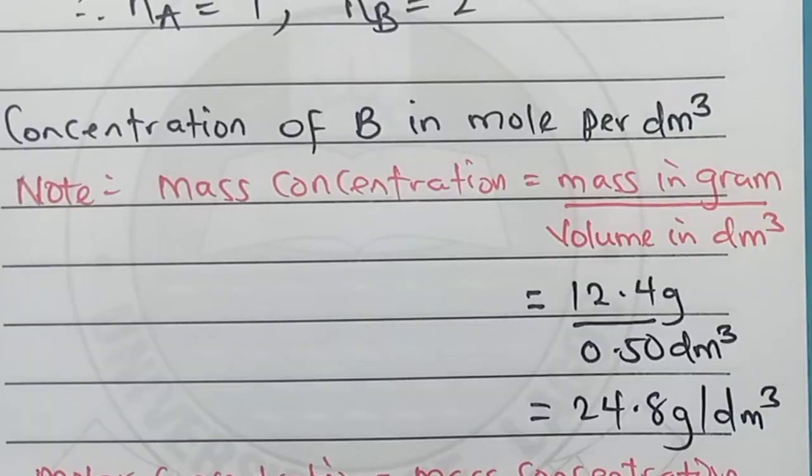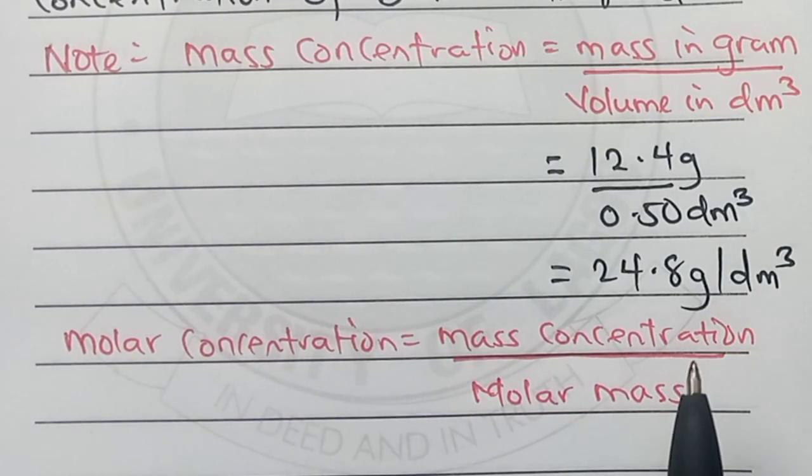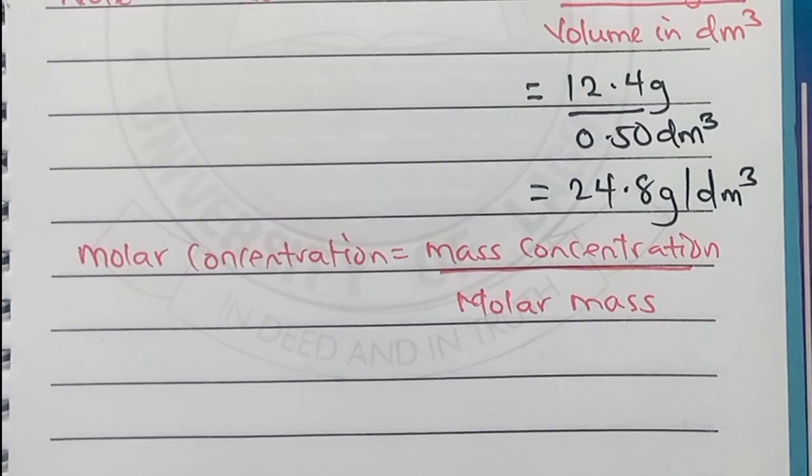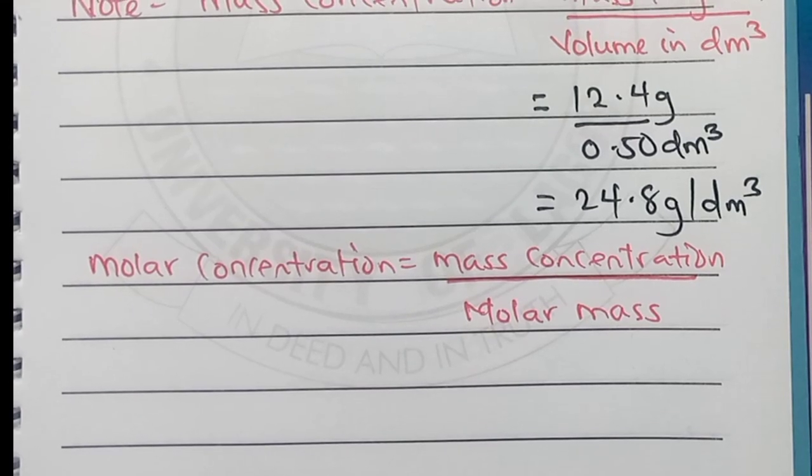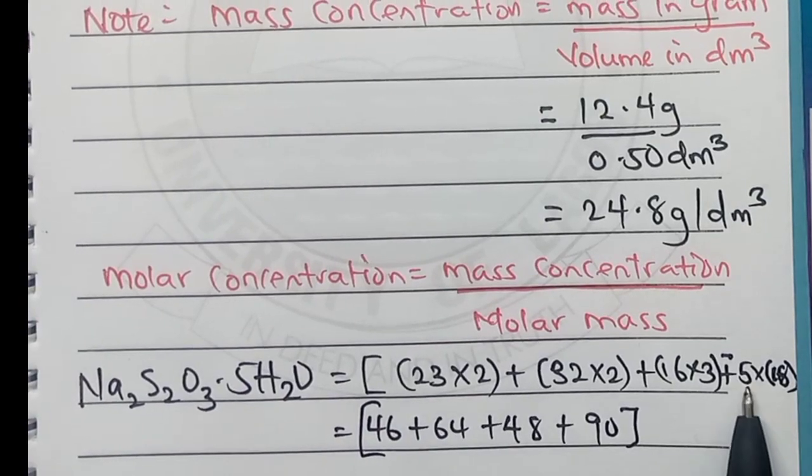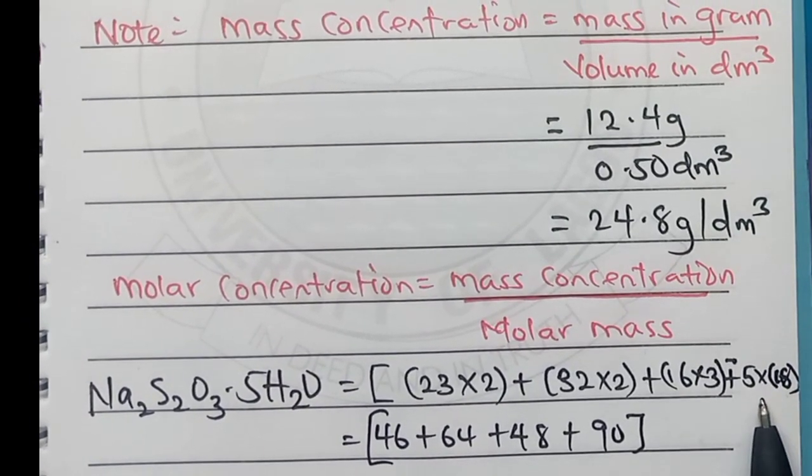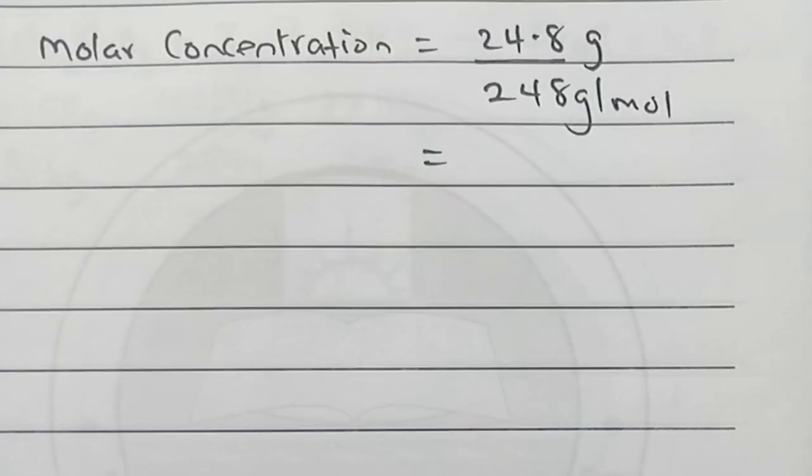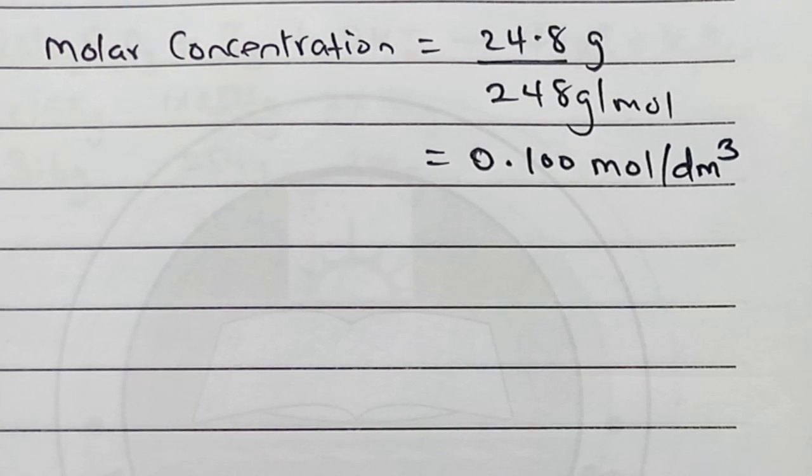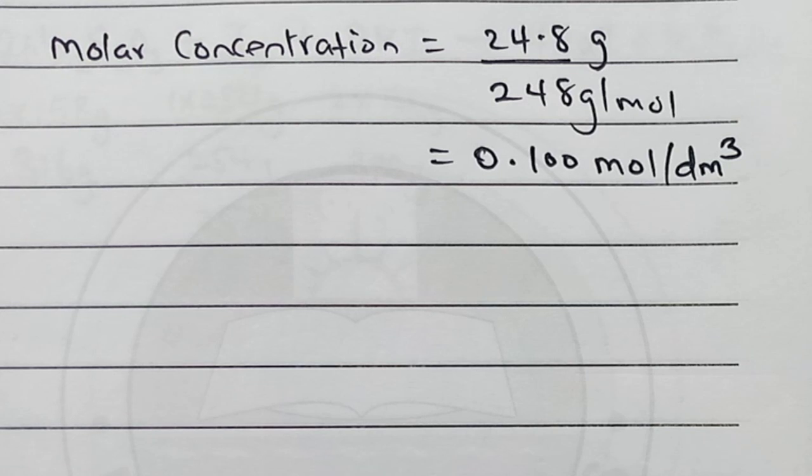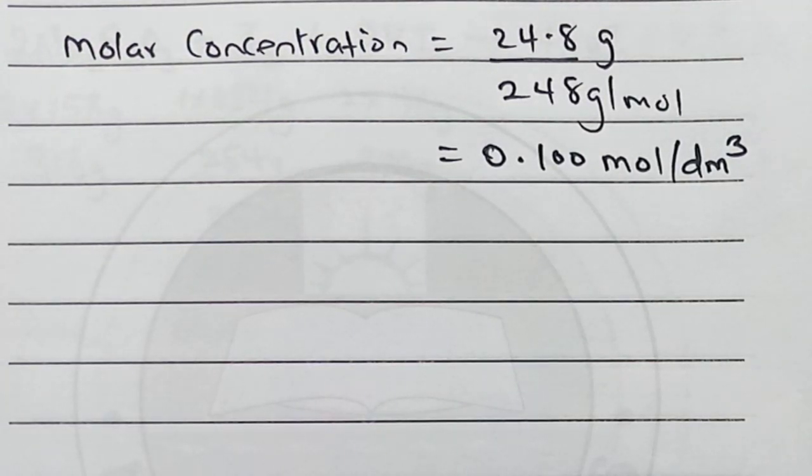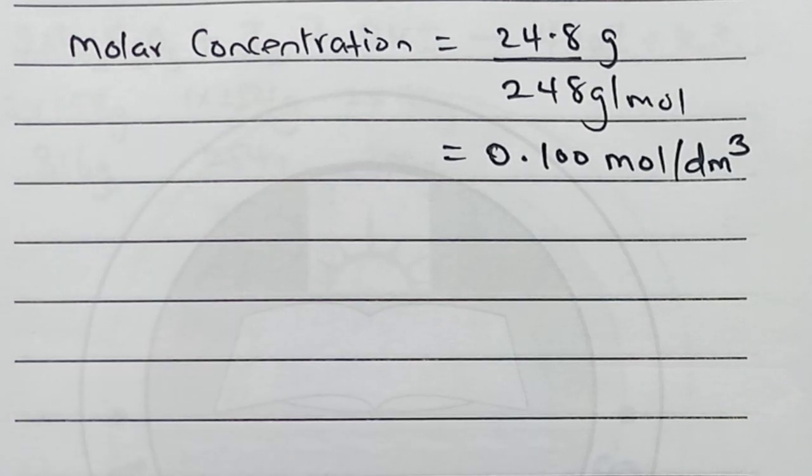Now we can go for molar concentration. We know that molar concentration has a relationship with mass concentration and molar mass. We need to look for the molar mass of sodium thiosulfate pentahydrate. 5 times 18 (this 18 is from 2 hydrogen and 16 oxygen) gives 90. Joining this together, we have 248 g/mol. Molar concentration gives us 0.1 mol/dm³.